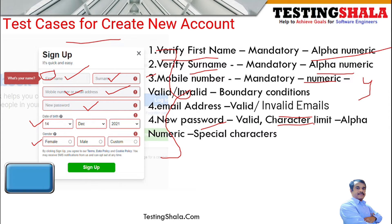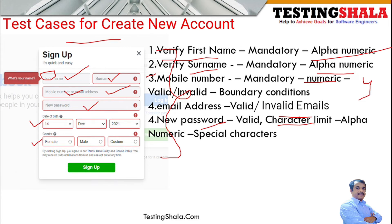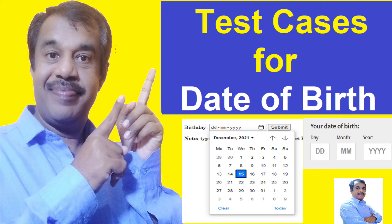If the requirements are not clear about what to validate and what not to validate, you should ask and get it clarified — do not assume. If there are specific guidelines for the password field in your organization, apply those validations accordingly. Do not make it generic; follow the specific guidelines provided.